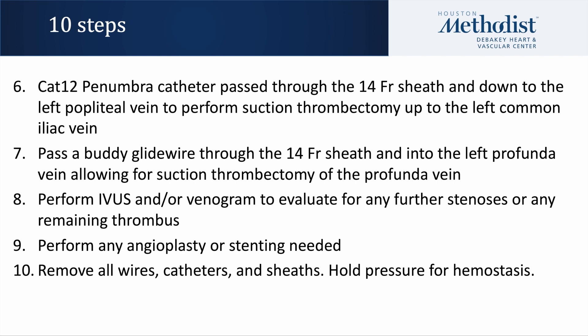Next, we passed our CAT-12 Penumbra device through the 14-French sheath and down to the left popliteal vein to perform suction thrombectomy up to the left common iliac vein. We were also able to get a buddy glide wire through the 14-French sheath and into the left profunda vein, allowing for suction thrombectomy of the profunda vein. In step eight, we performed IVUS and a venogram to evaluate for any further stenosis or remaining thrombus, and then performed angioplasty and stenting as needed.